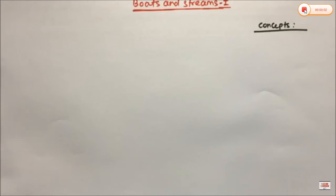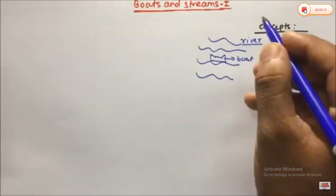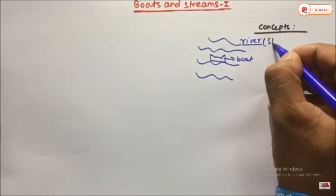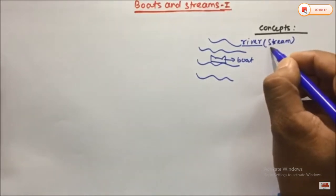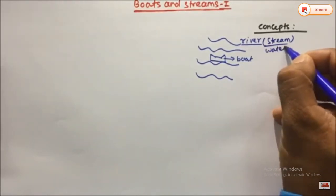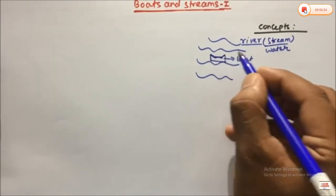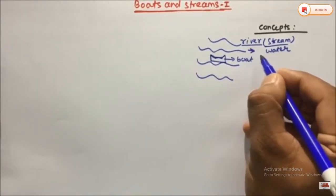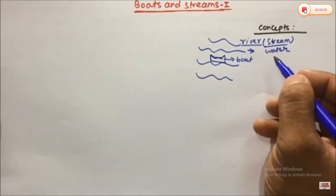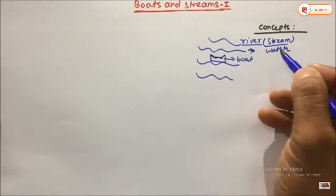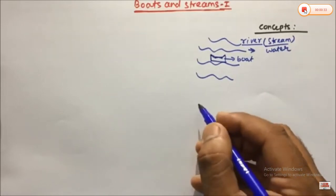Boats and streams is one of the very important topics in quantitative aptitude. Let's understand the concept and try to solve a few problems which frequently come in exams. The concept behind boats and streams involves a stream — also called a river or water — and a boat. The river and boat will be moving either in the same direction or in the opposite direction. There are a few terms to keep in mind before solving problems.